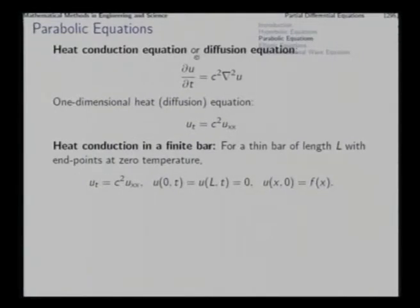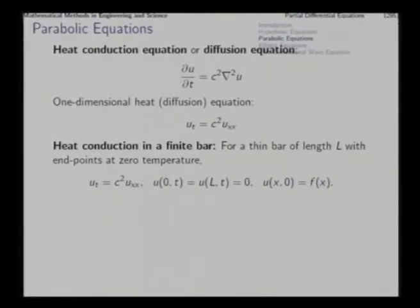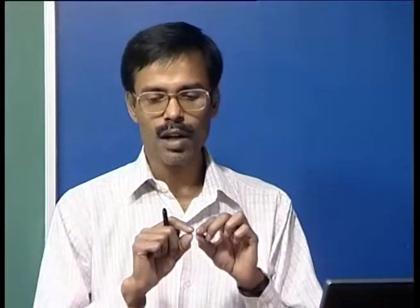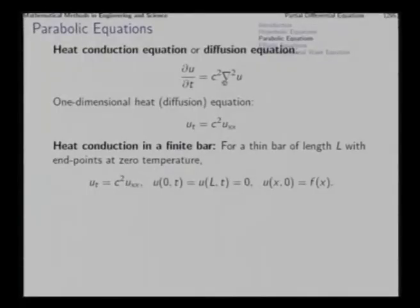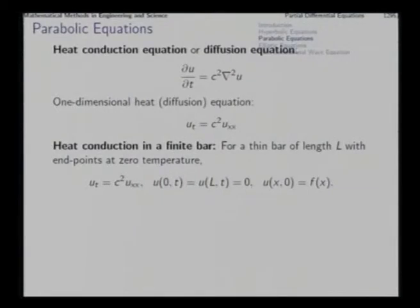We take the parabolic equation: del u by del t equals c squared into del squared u, that is the Laplacian. The Laplacian of u gives del 2u by del x squared plus del 2u by del y squared plus del 2u by del z squared. In the particular case of one dimension, only del 2u by del x squared remains, and that gives us the one-dimensional heat equation, which also governs one-dimensional diffusion.